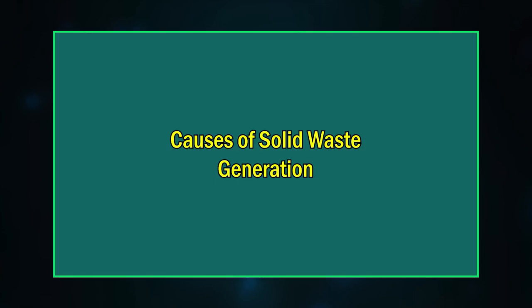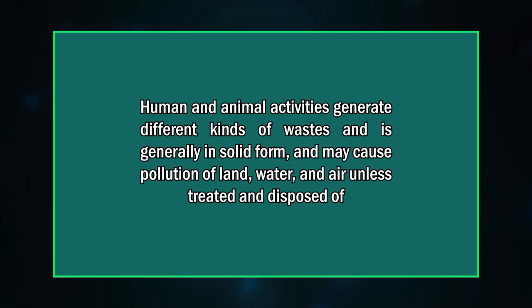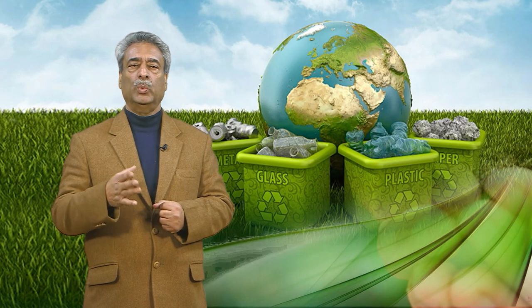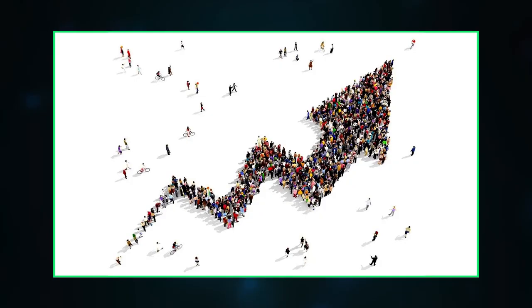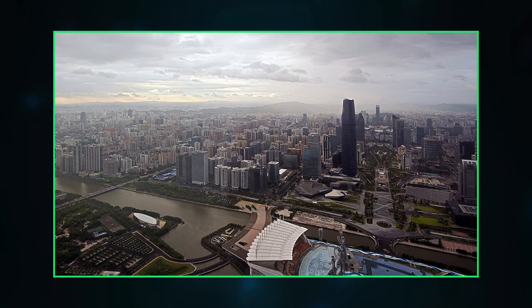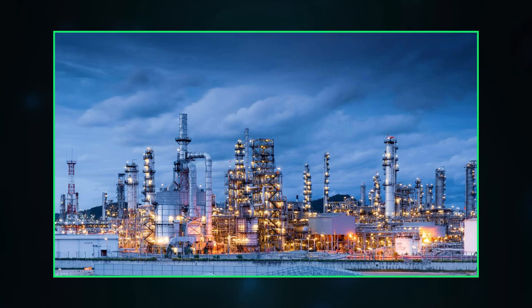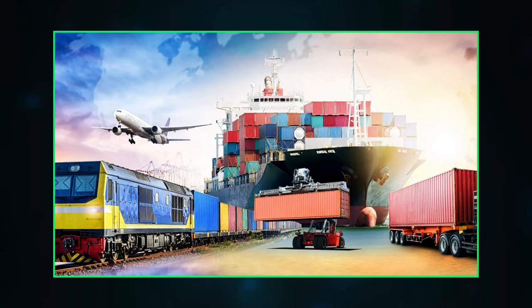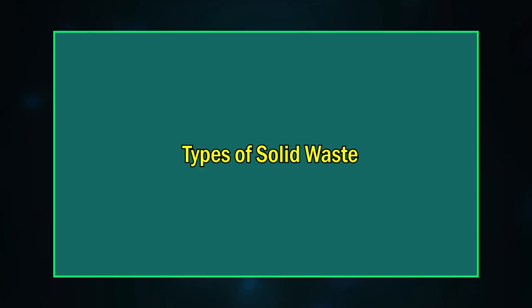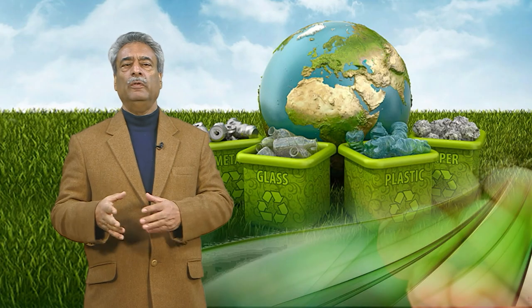Causes of solid waste generation: human and animal activities generate different kinds of waste, generally in solid form, which may cause pollution of land, water, and air unless treated and disposed of. Some of the main causes of solid waste generation are population increase, growing urbanization, industry, mining, and transport.